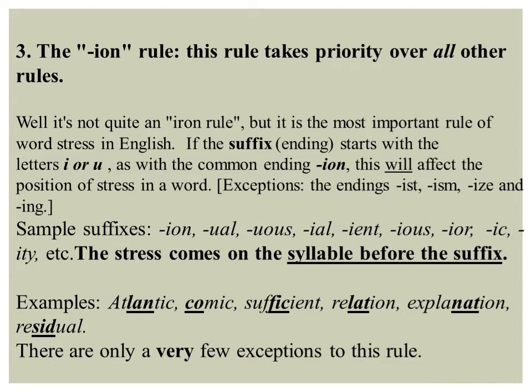Example suffixes following the ion rule include: '-ion', '-ual', '-uous', '-ial', '-ient', '-ious', '-ior', '-ic', '-ity'. In words ending in these suffixes, the stress normally comes on the syllable before the suffix. Examples: 'at-LAN-tic', 'COM-ic', 'suf-FI-cient', 're-LA-tion', 'ex-pla-NA-tion', 're-SID-u-al'. Usually the stress comes just one syllable before the suffix, and there are very few exceptions to this rule.